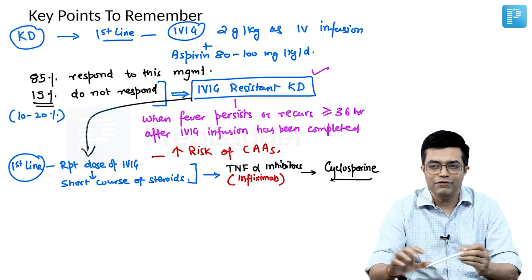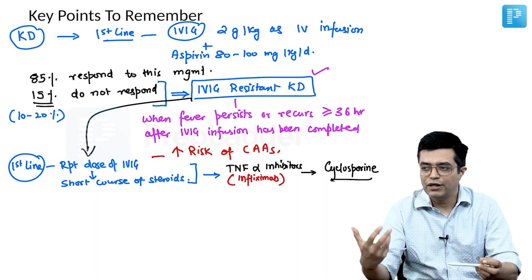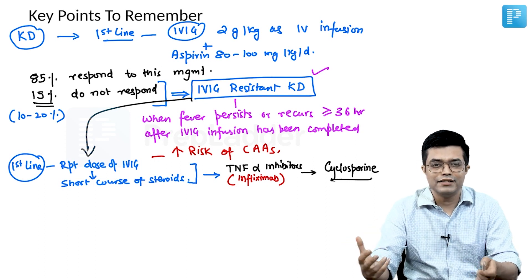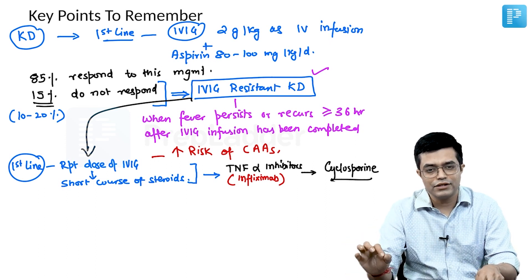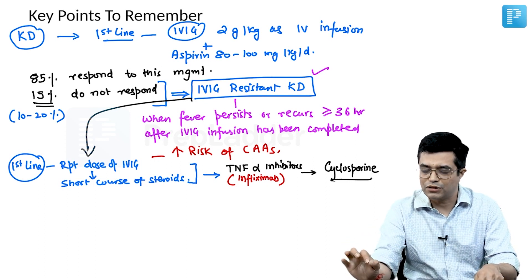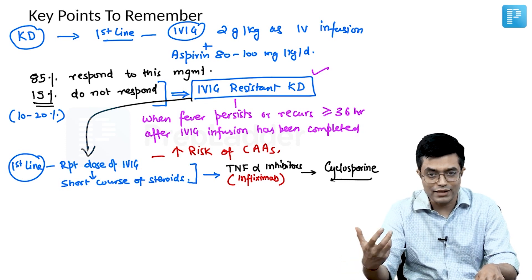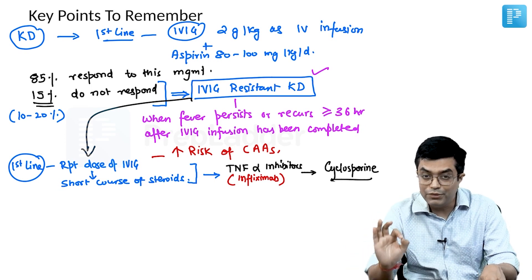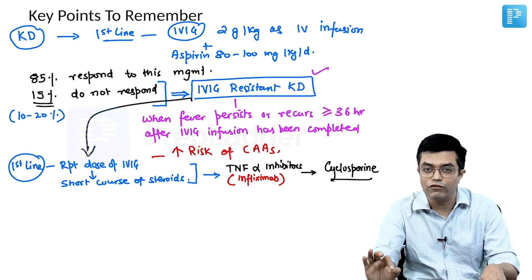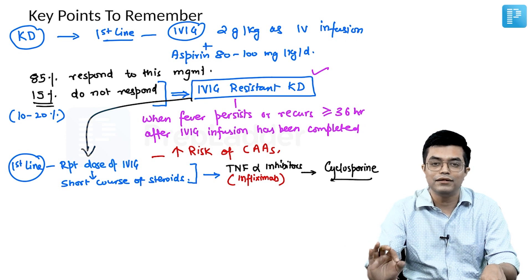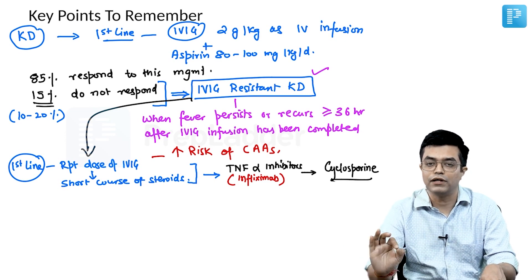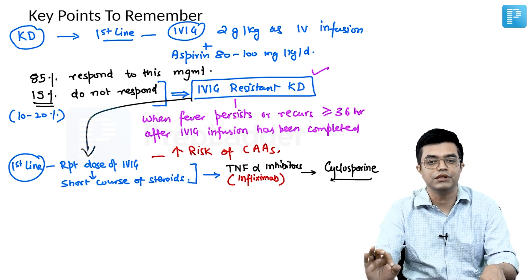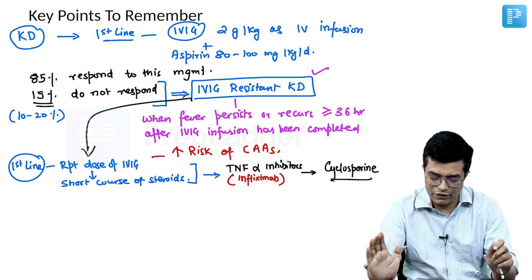Remember: if fever improves and Kawasaki disease activity comes down, the risk of aneurysm comes down. If fever persists, it means the disease is still active, and whether you have given IVIG or not, it will not matter — the patient will remain at risk of coronary artery aneurysm as long as fever and inflammation continue.